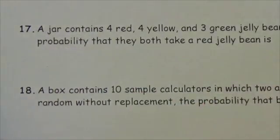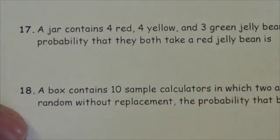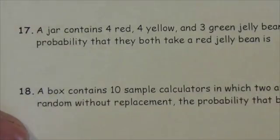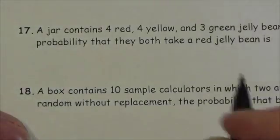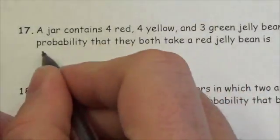The jar contains four red, four yellow, and three green jelly beans. If Joan and Jim take one jelly bean each, the probability that they both take a red jelly bean is... Let's take a quick look at this, so the probability